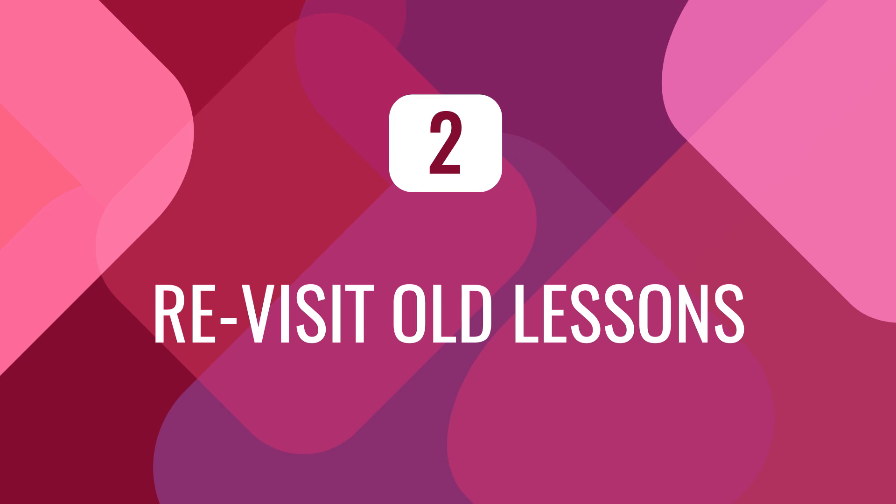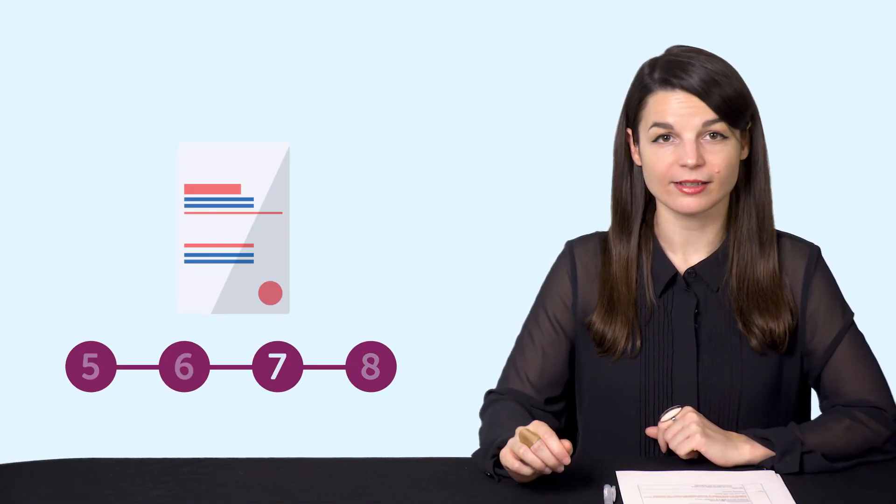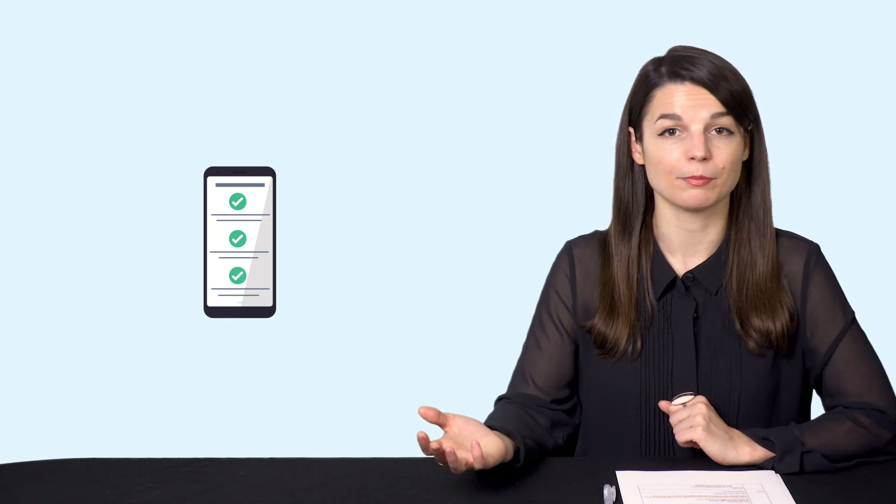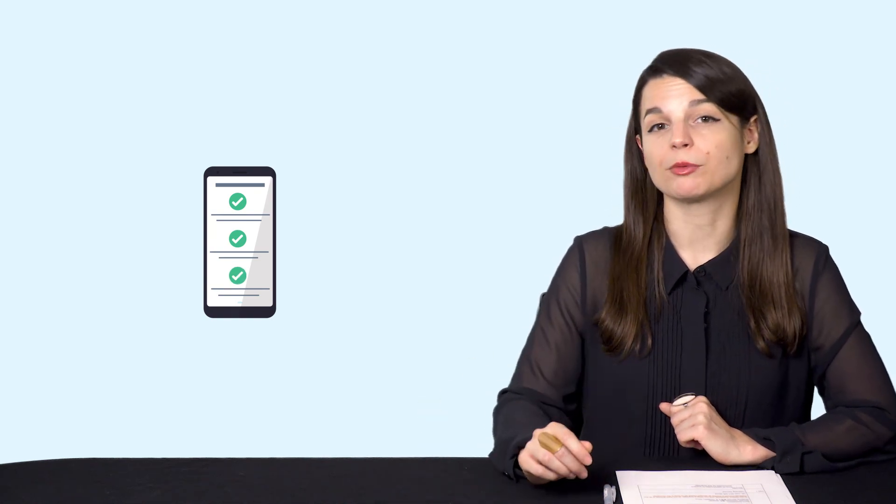Number two. Revisit old lessons. An easier way to self-assess your language level is to revisit old lessons. You can do this with any program you're learning with. If you've truly made progress, then you should be able to understand the lesson dialogues with no problem. If not, then you know that you need to review them some more.